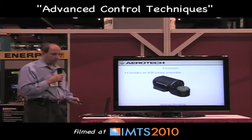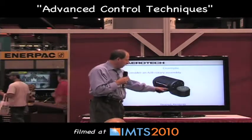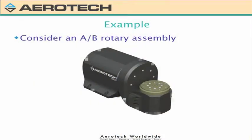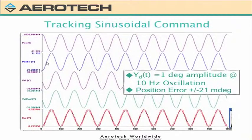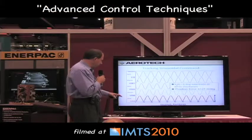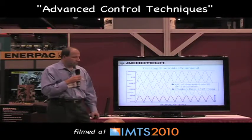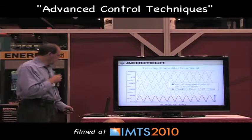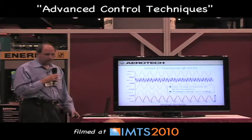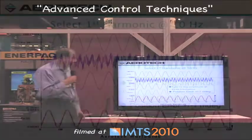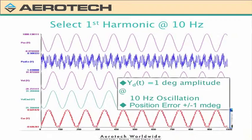Consider a typical AB stage where I rotate A and B simultaneously. There's a mass imbalance on them, so rotating one axis affects the motion of the other. I put in a simple 10 Hz oscillation into the A axis — one degree at 10 Hz. The error signal in position is about plus and minus 21 milli-degrees. I then insert the filter at 10 Hz, and the resulting error is down to plus and minus 1 milli-degree — 21 times less error just by applying this filter.